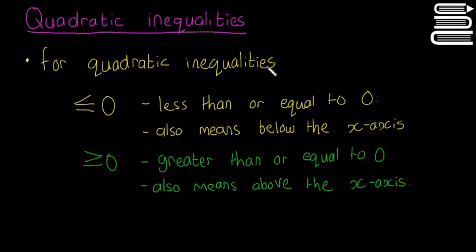So for quadratic inequalities, all the same rules still apply as for linear, so it's all the same except when you multiply or divide by a minus number and then you have to change the sign. Otherwise, they're exactly the same as normal equations.